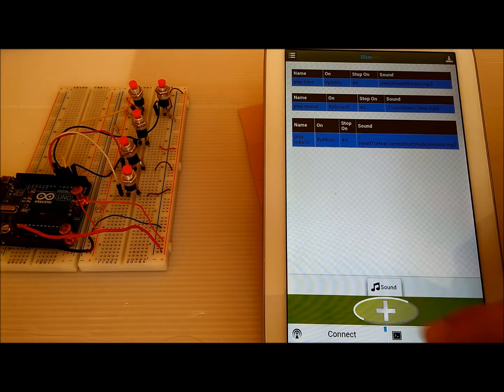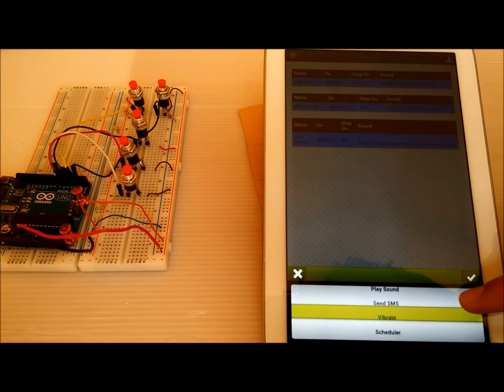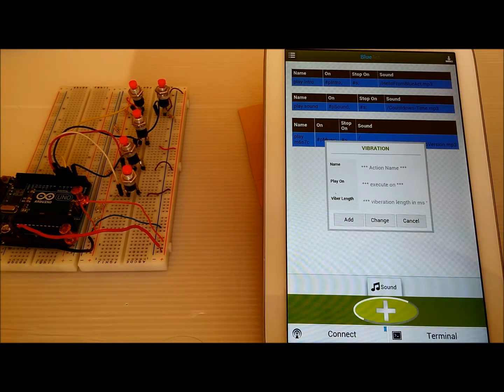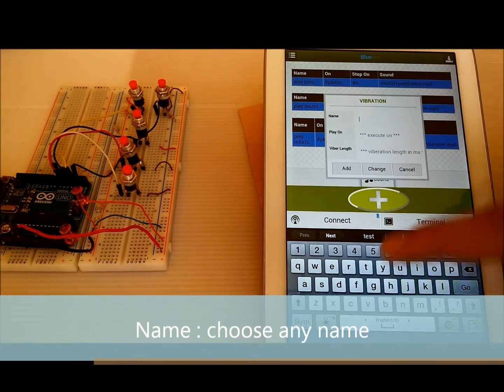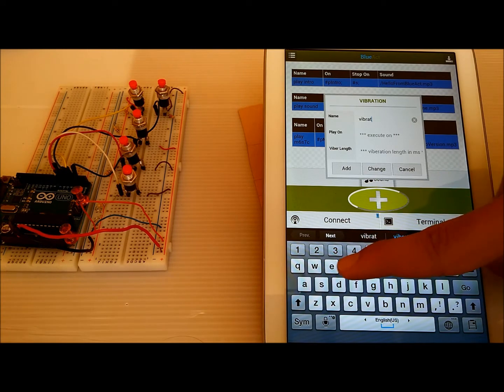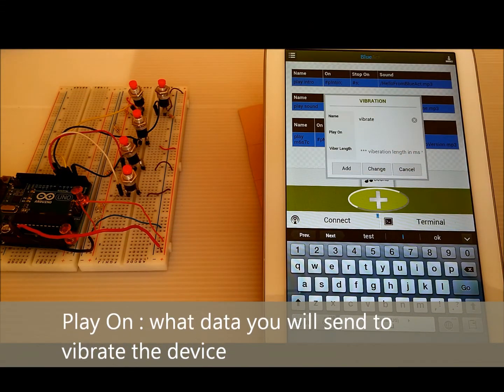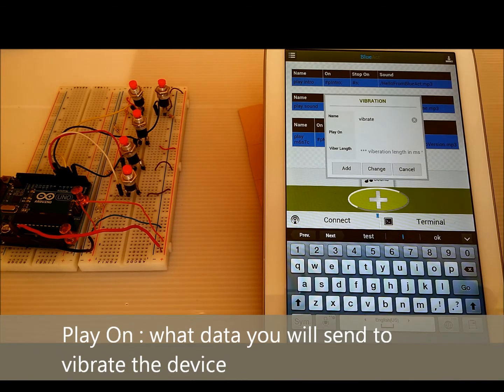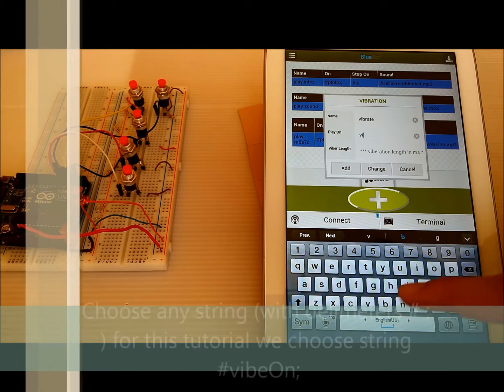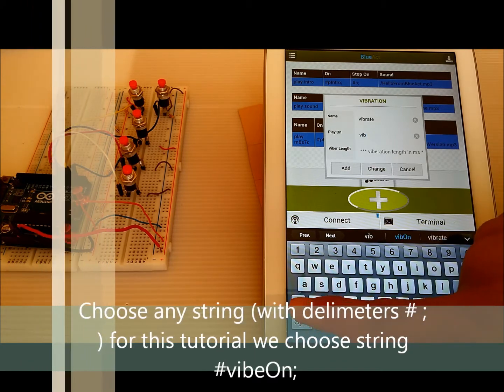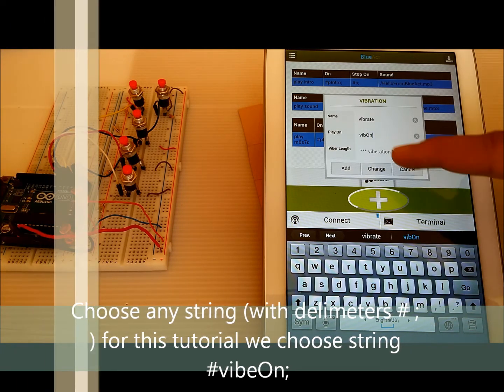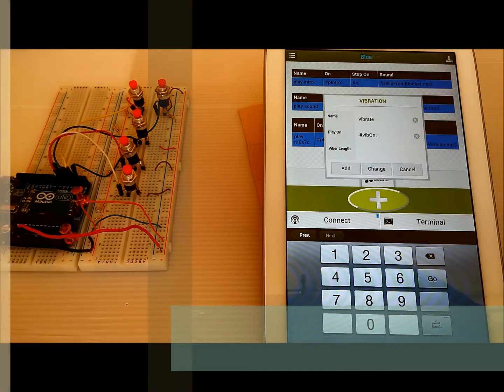Now we have here three actions from sound. Now let's add another action, but this time let's choose vibration action. So scroll down to vibrate, select. Now the name is any name like vibrate. Play on or when this action will be executed, or when the phone will be vibrated, we need to receive vibe on.